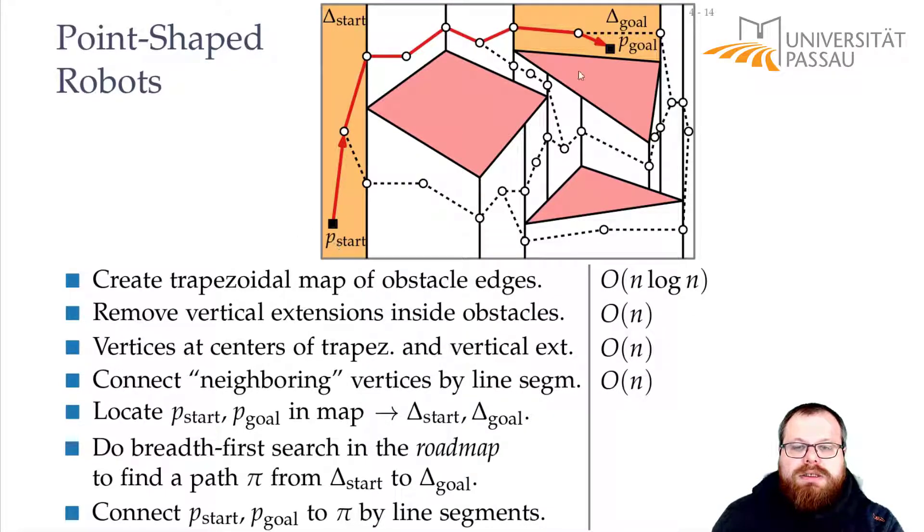To locate the start and end point, we have to do a query in the trapezoidal map, and for that we know we can do it in order of log n time. And to find any path in this graph, we can for example use the breadth-first search or depth-first search, whatever we want to use. We can do that in order of the number of vertices plus the edges. This is a planar graph with order of n vertices, so this takes order of n time. And then finding this segment is very quick—we can do that in constant time.